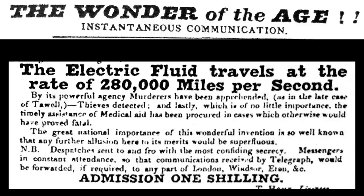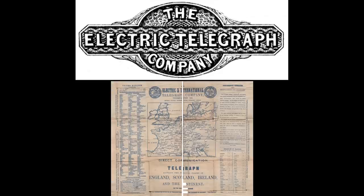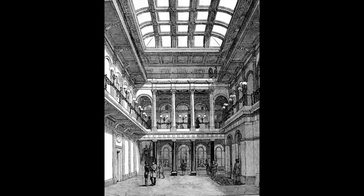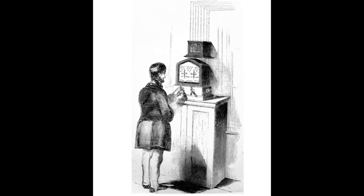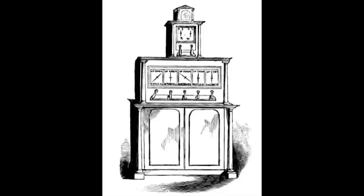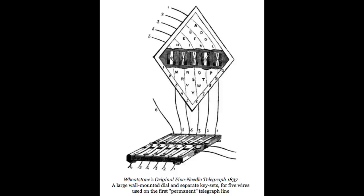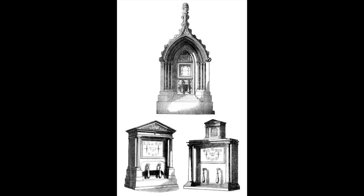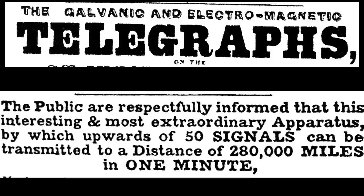The Electric Telegraph Company was the first public telegraph company. It was formed in 1846 after its owners purchased the key needle telegraph patents at the time. But the speed of these various needle telegraphs never surpassed around 60 letters per minute, as each needle couldn't signal much faster than one deflection per second.